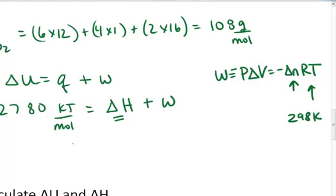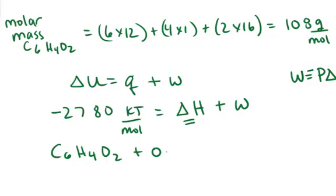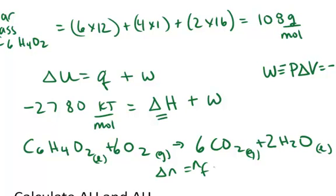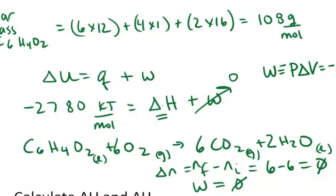First I get the balanced chemical equation to find the change in gas moles. The combustion of C6H4O2 combines with oxygen to give carbon dioxide plus water. Quinone is a liquid, O2 is a gas, CO2 is a gas, and water is a liquid at room temperature. Balancing gives: 1 mole quinone plus 6 moles O2 → 6 moles CO2 plus 2 moles water. The change in gas moles is delta N = 6 minus 6 = 0, so the work is zero. Therefore, the change in enthalpy equals the change in internal energy: negative 2,780 kJ per mole.